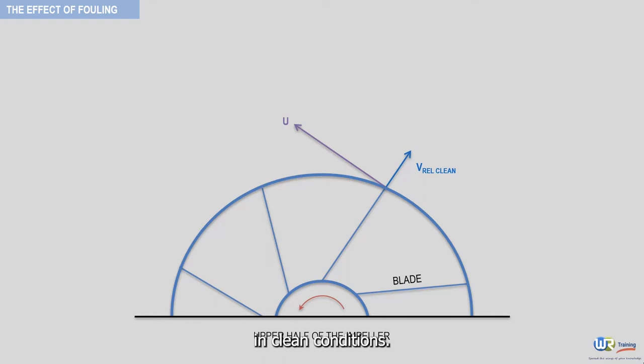In clean conditions, the gas exit velocity is the sum of these two vectors as depicted here. This gas exit velocity has the following flow angle, which we'll call alpha c. The letter c refers to the clean conditions.